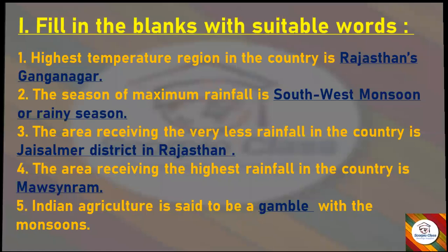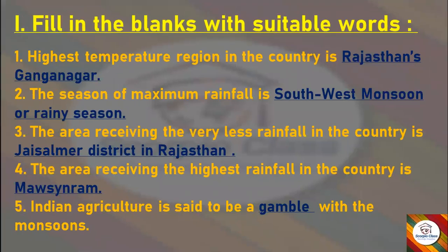Now let's start with the notes. First, fill in the blanks with suitable words. The highest temperature region in the country is Ganganagar, Rajasthan. The season of maximum rainfall is the southwest monsoon or rainy season.